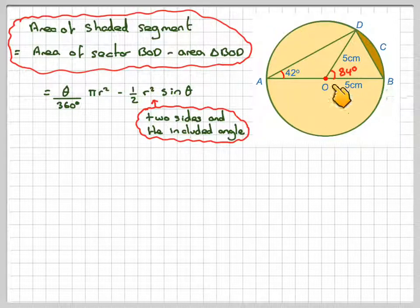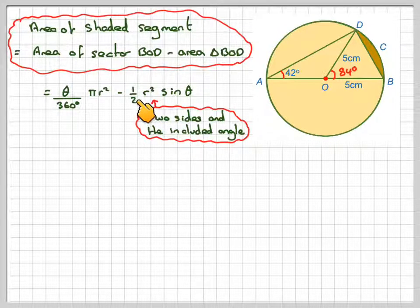It's this length times this length, and this angle here is the included angle, so we can use a half AB sin C, which is half r times r, which you write as r squared, sin of this angle here, 84.